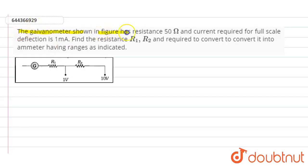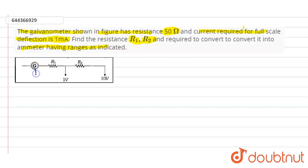In this question, it is given that the galvanometer shown in the figure has a resistance value of 50 ohms. The current required for the full scale deflection is 1 milliamp. We need to find the resistance values R1 and R2 required to convert it into an ammeter having the ranges as indicated. We have 1 volt and 10 volts as the two voltage values.